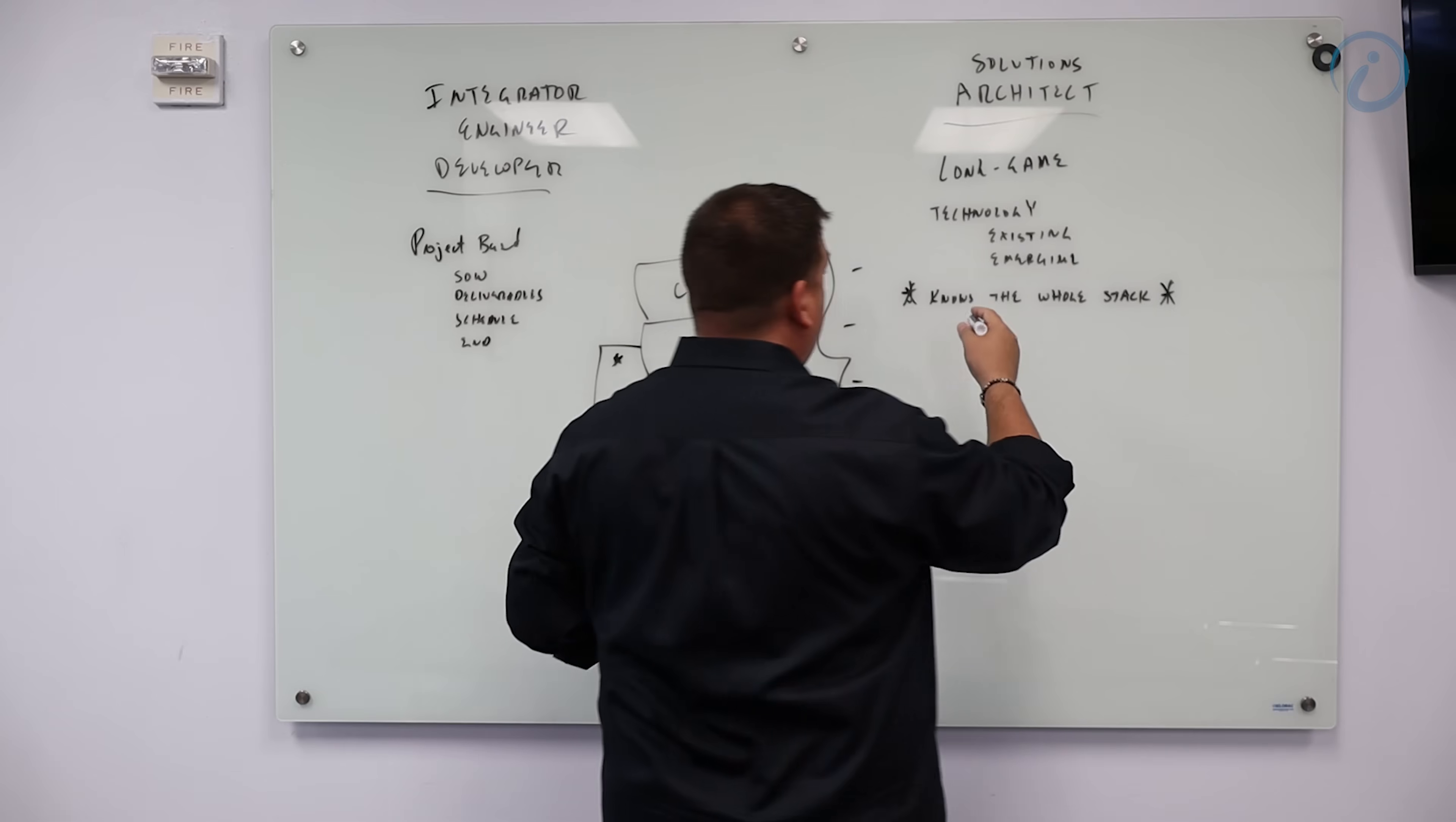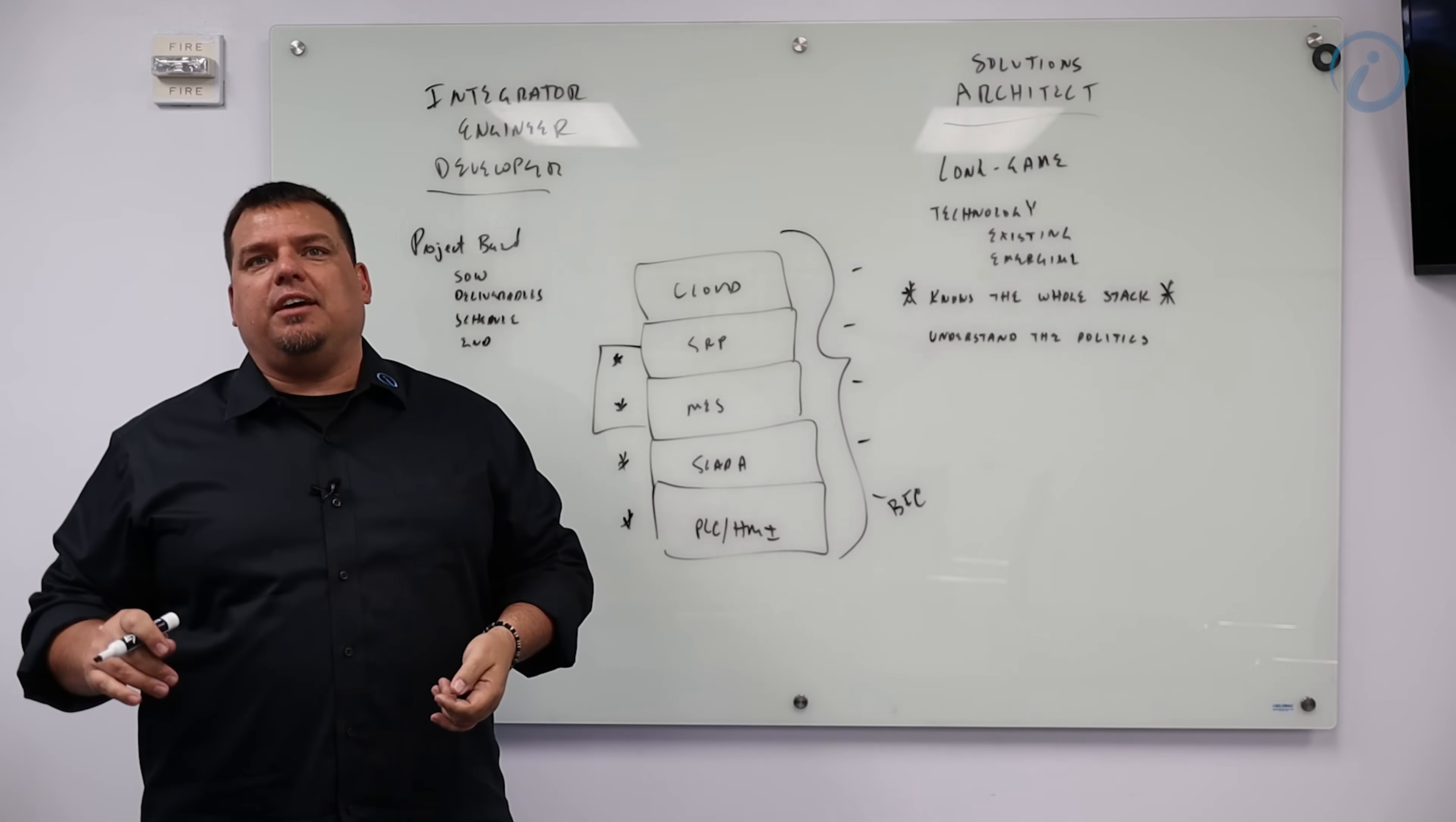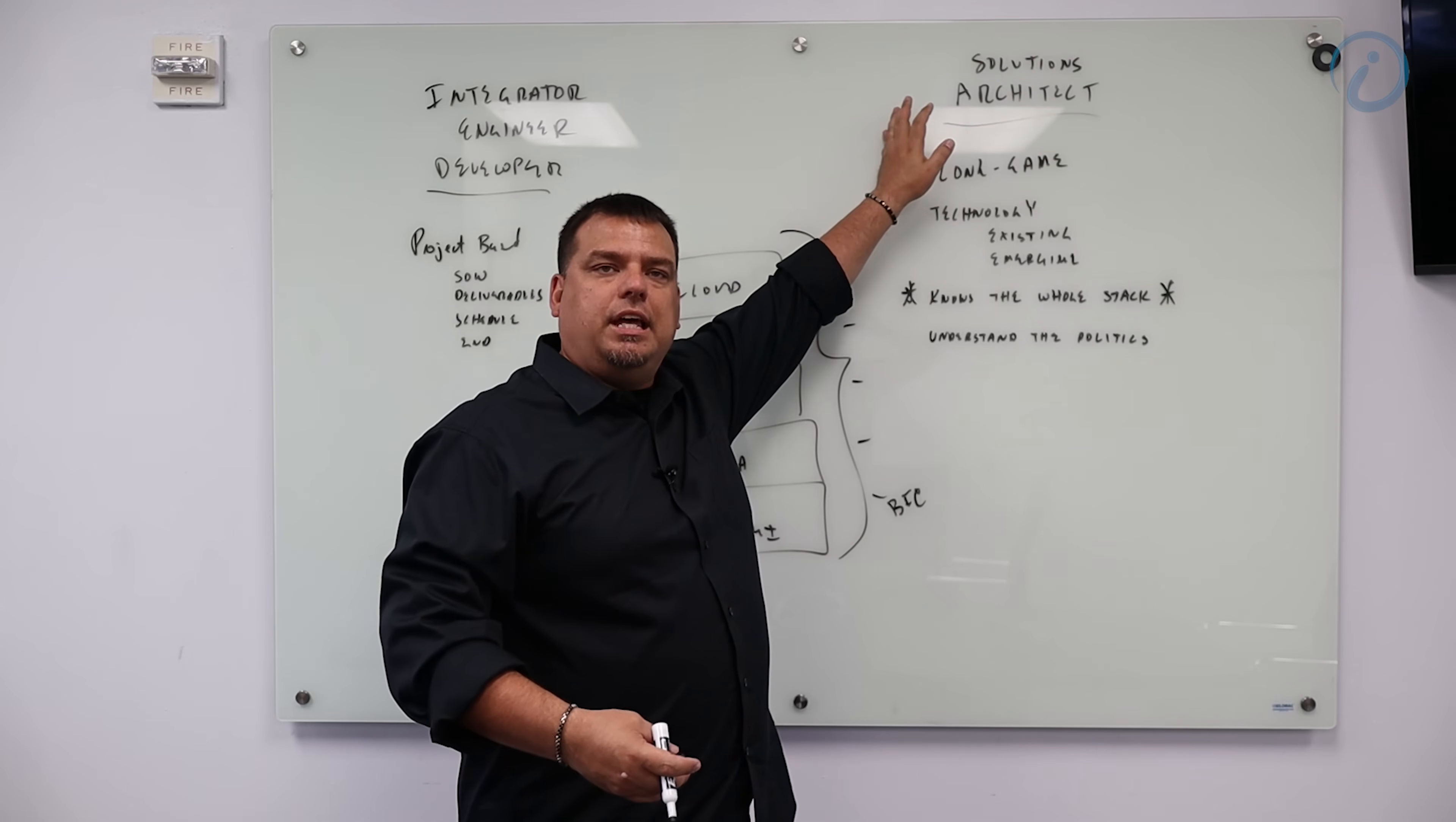Solutions architects, they understand the politics. And what do I mean there? To digitally transform a business, that is, to digitally transform an organization or to architect an enterprise class solution, not only do you have to assess where someone is and where they want to go, but you have to assess why is it that these really smart people can't get from where they are to where they want to go. And almost always, it has to do with internal politics. There's some type of internal resistance that you have to jump over. Solutions architects can do that.